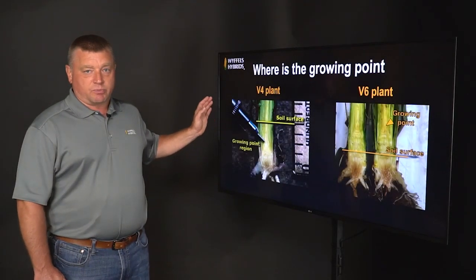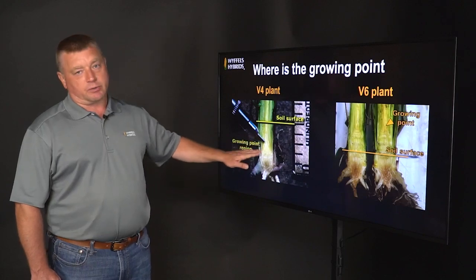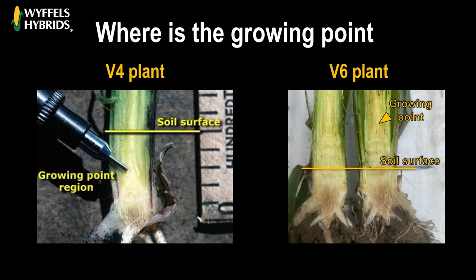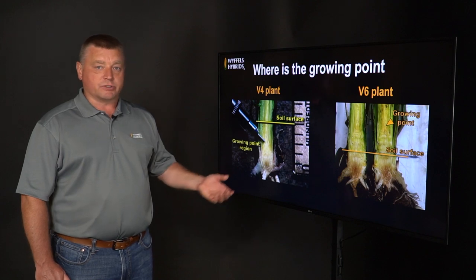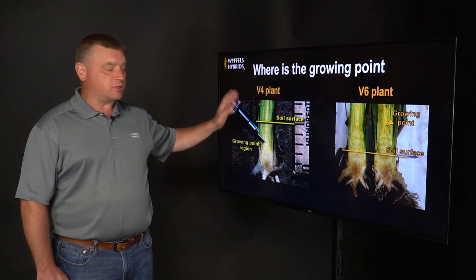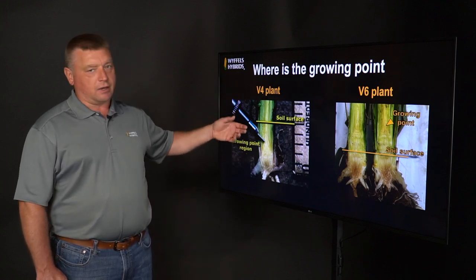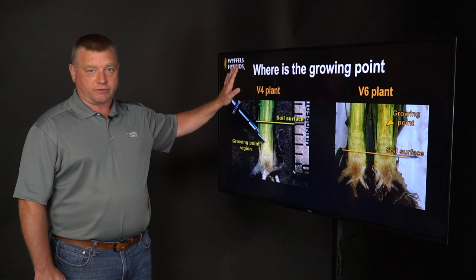When staging plants, it's important to know where the growing point is. In a V4 plant, you can see that the growing point — this triangular point when the stem is dissected in half — is below the soil surface. Now at V6, that growing point has breached and is above the soil surface. So if you think about damage to above-ground leaf tissue on a smaller corn plant from emergence to V4, the corn plant can withstand some damage because the growing point is below the soil surface and can regenerate leaf tissue. So if we get hail, animal damage, or a light freeze, we can lose some above-ground leaf tissue and still be fine.